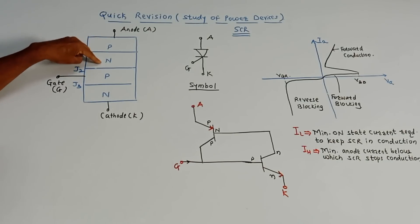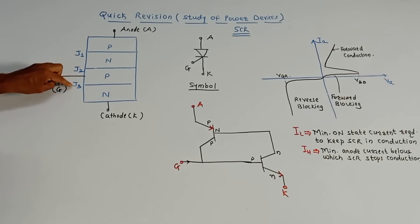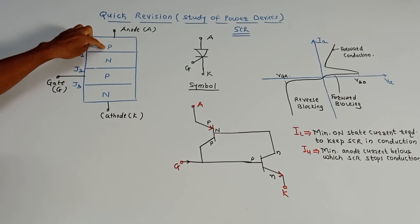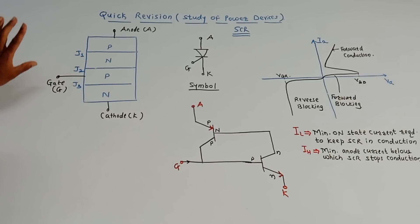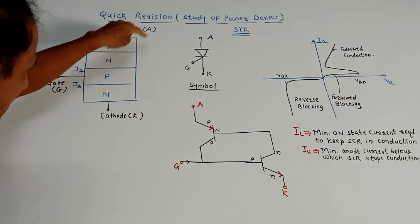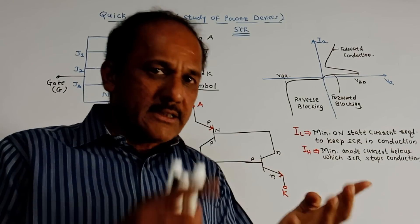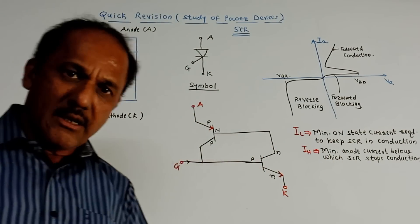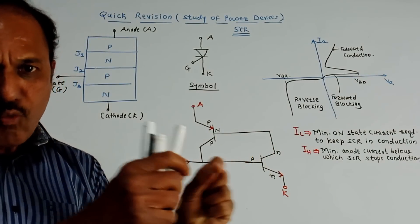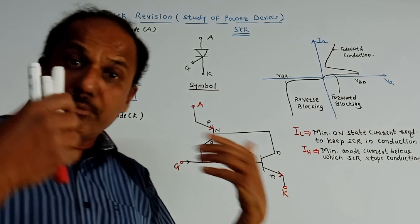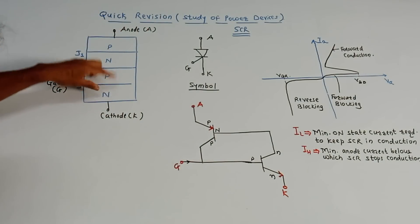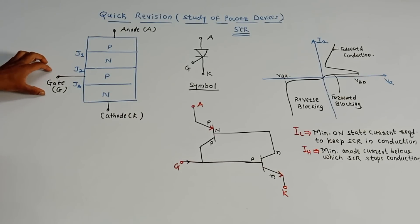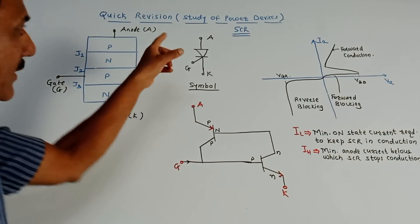As shown in this diagram, there are four layers: P, N, P, N, and there are three junctions J1, J2, and J3. J1 junction is between the upper P and N; J2 is the middle N and P; J3 is the lower P-N junction. There are three terminals: anode terminal, cathode terminal, and gate terminal. This is called a unipolar device because current flows in one direction, like a normal diode.